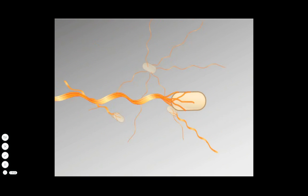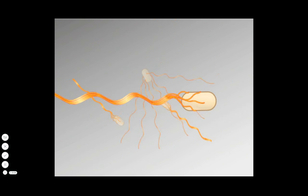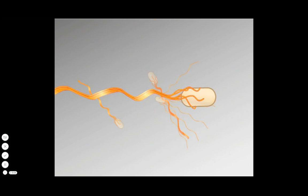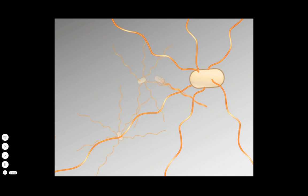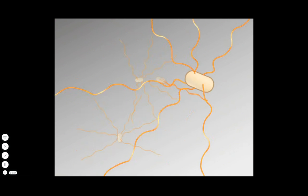The repeated course of swimming and tumbling results in what is known as a random walk. This video shows E. coli bacteria swimming and tumbling, reorienting and swimming again.